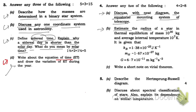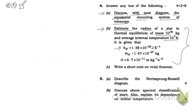Now question number 4B: estimate the radius of a star. The mass, temperature, internal temperature, and Boltzmann's constant are given. Using those given informations, we're going to estimate the radius of the star.